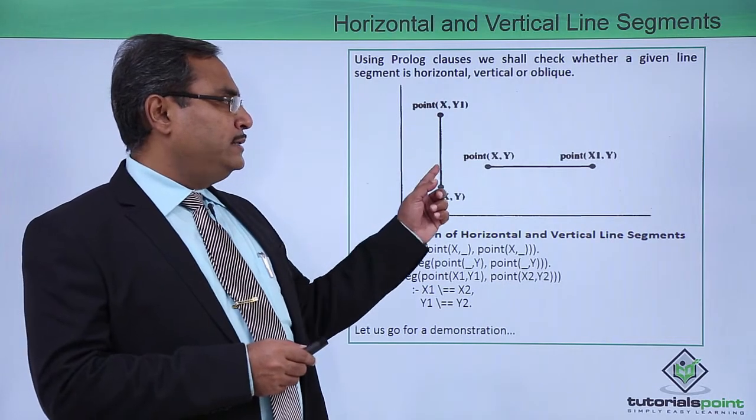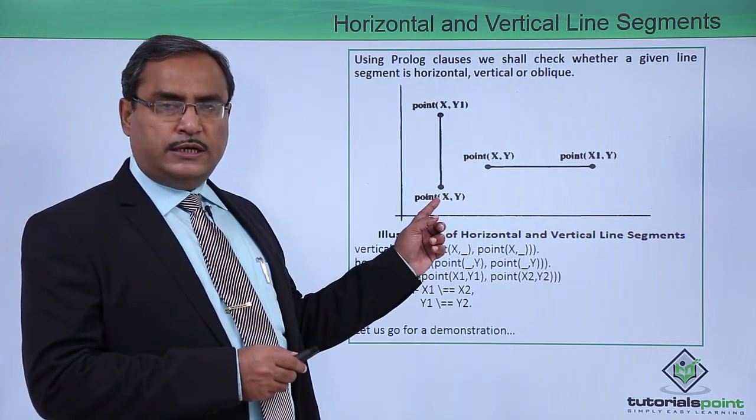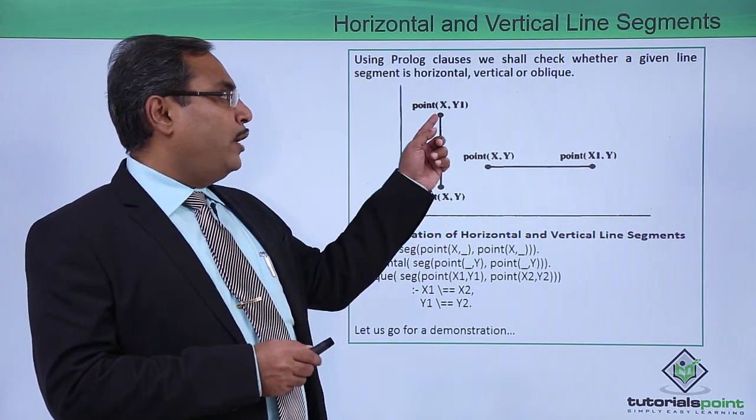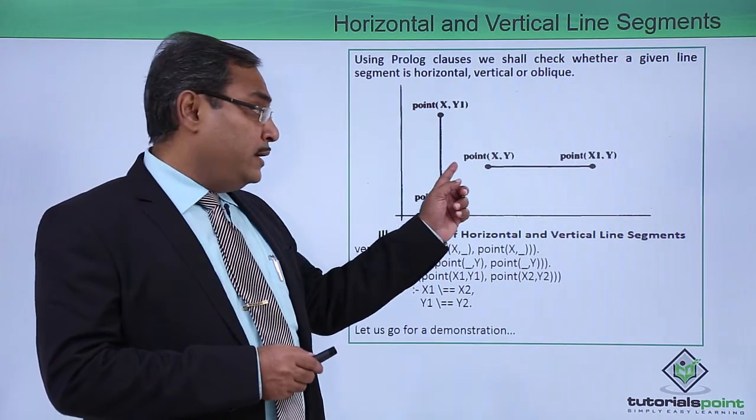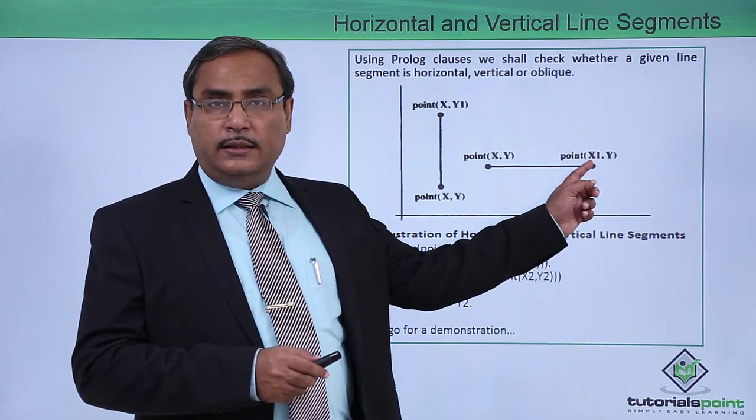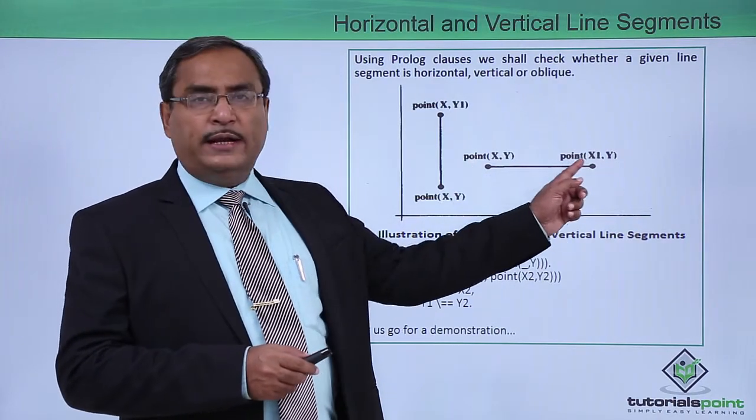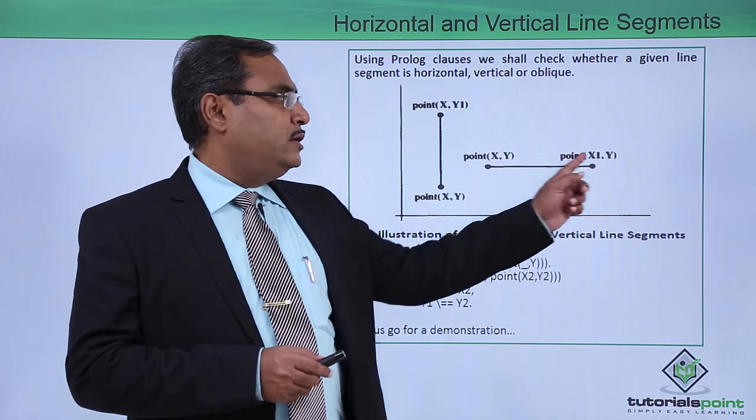We know that whenever we are having some line segment which is vertical, that means the two end points will have the same x coordinates. Whenever a line segment is horizontal, then its two end points will have the same y coordinates.